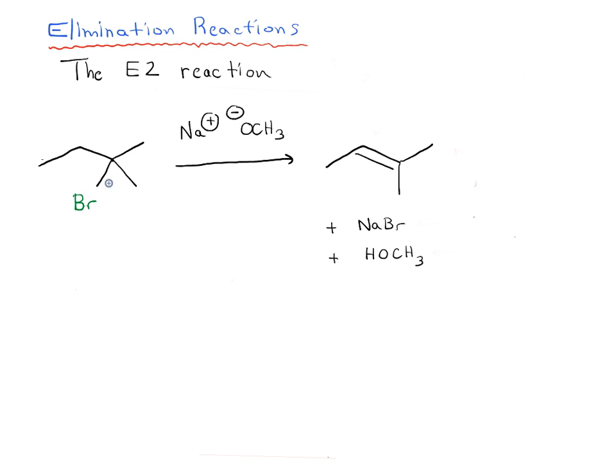Here we have an example of an E2 reaction. We're starting with an alkyl halide and treating it with sodium methoxide as our base. Notice that the product we're forming is the alkene between there, so it is a Zaitsev product just like we've seen in E1 reaction. The byproducts are sodium bromide and CH3OH, as CH3O minus takes a proton away from this alkyl halide to become the conjugate acid.